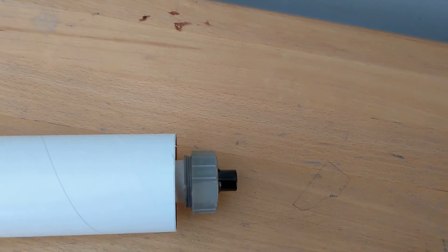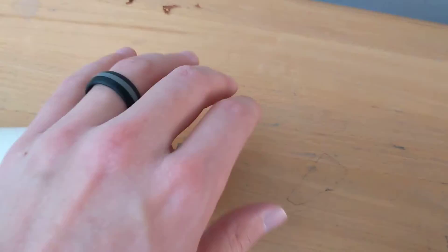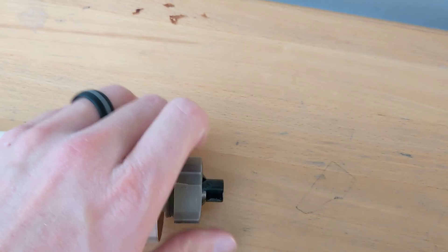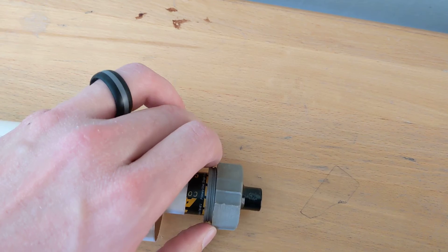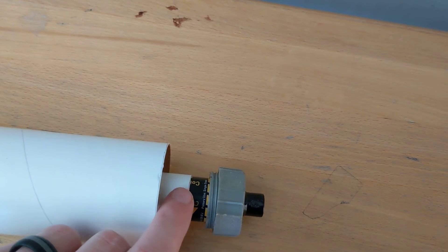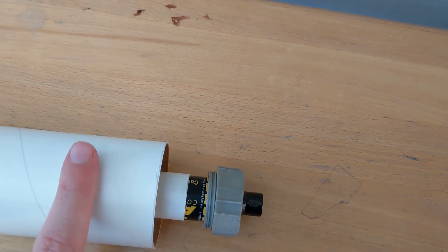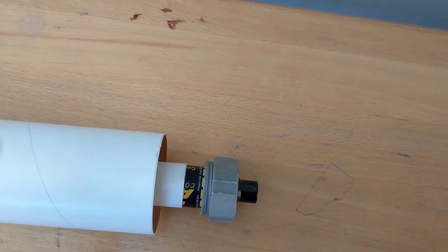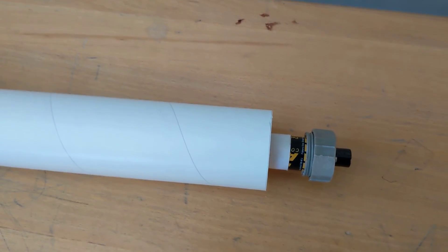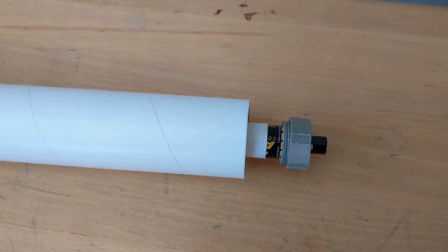And then, yeah, so all these pieces should be epoxied together. Obviously not the motor retainer screws, but this portion should be epoxied to this. Your centering rings should be epoxied to your body tube, okay? Okay, that's the tutorial for engine placement.